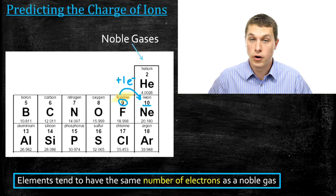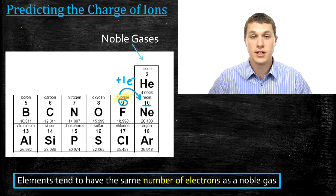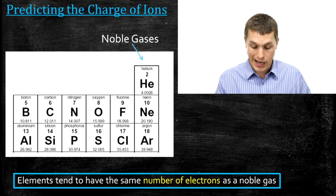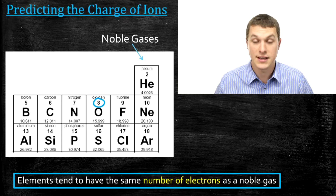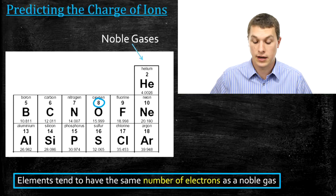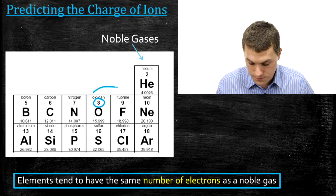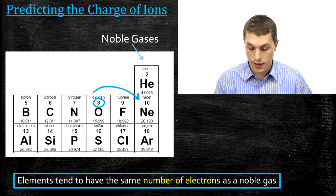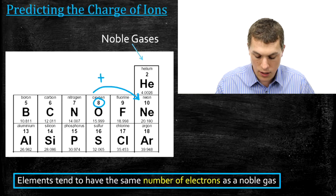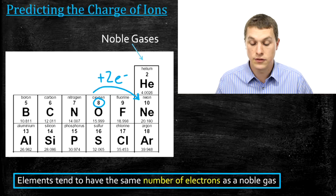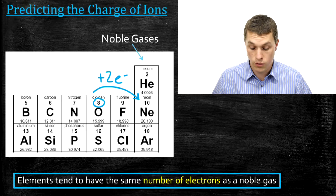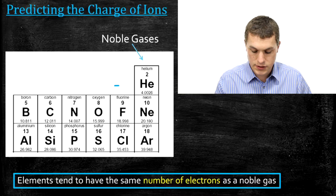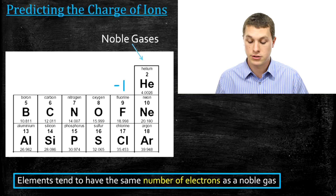That's actually true for that whole column — fluorine, chlorine below it, and bromine below that also tend to form ions that are charged negative one. Now let's think about what happens to oxygen. Oxygen has eight protons and eight electrons when neutral. If it wants to go to neon, it's going to have to gain two electrons to go from eight to ten. So oxygen tends to gain two electrons and becomes charged with a negative two. The fluorine/chlorine column tends to become negative one because they need to gain one electron to look like a noble gas, while the oxygen group tends to be charged negative two.